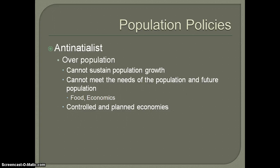Now we'll move on to antinatalist policies. As you can imagine, the whole situation there is if you have a problem of potential overpopulation where you cannot sustain the population growth of your particular country. The government is concerned there won't be enough resources — economic resources, jobs, natural resources in terms of food, energy, and water. So they try to plan ahead to curb population growth. You see this mostly in countries where you had some sort of planned or controlled economy, where rapid population growth outpaced what the planned economy could provide.